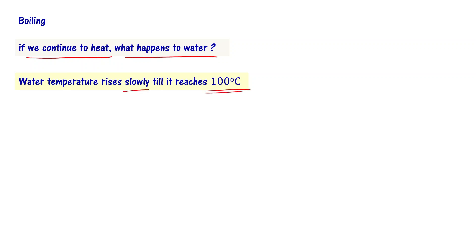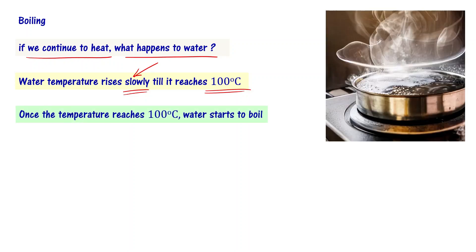The amount of water in the beaker and how much heat you are supplying depends. If you are using the gas stove, low flame or high flame, the temperature rise depends on that. Once it reaches 100 degrees centigrade, if you keep on supplying heat, then water is going to boil.